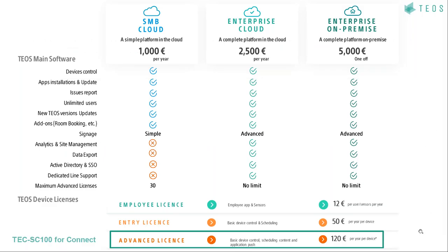Just as a reminder on pricing: in order to get the meeting display on Bravia — where you will also be able to use signage and any of our other applications — it is 120 euro per year as an advanced license, where all the TIOS functionalities will be enabled by default, so basically 10 euro per month per Bravia. The license for TIOS Connect on top of it is 250 euro, but this one is not a yearly cost — it is a for-life cost.